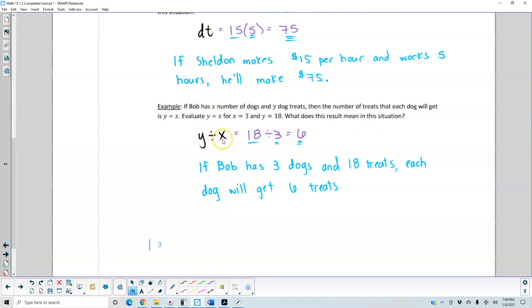Y divided by x, plugging in the values for y to be 18 and x to be 3. 18 divided by 3 equals 6. Now, how do we translate this result in this situation? Well, if Bob has 3 dogs and 18 treats, each dog will get 6 treats.